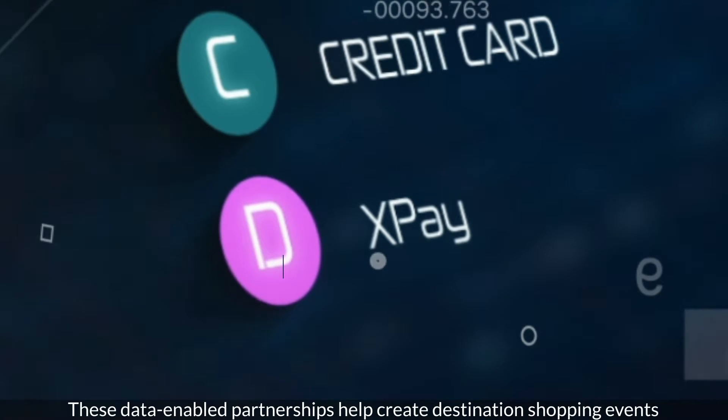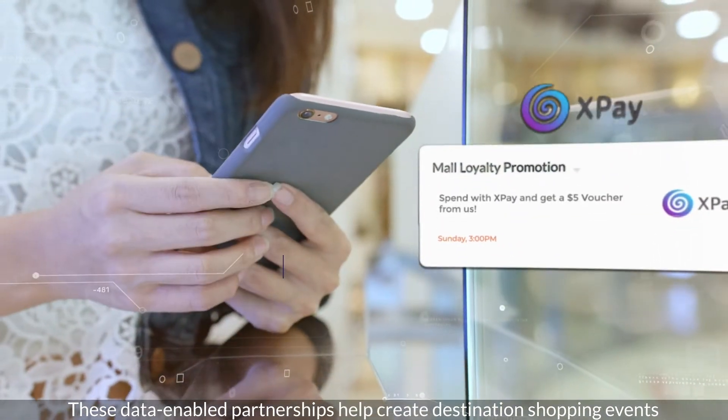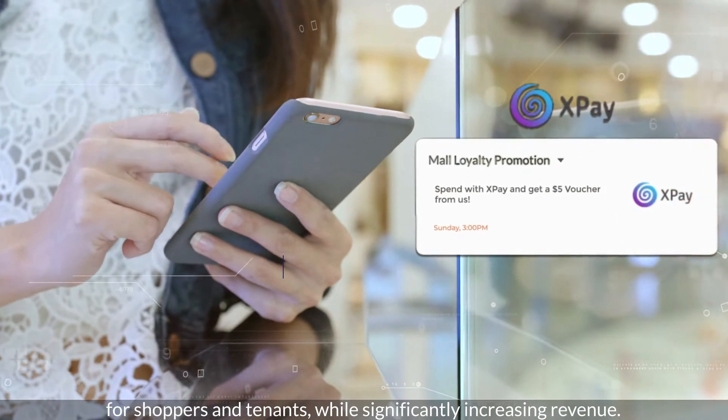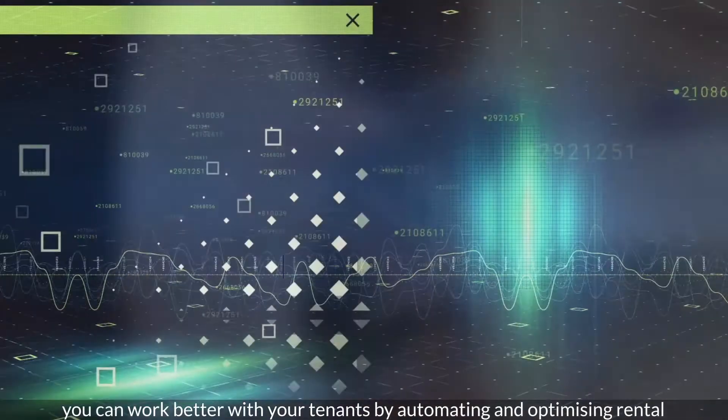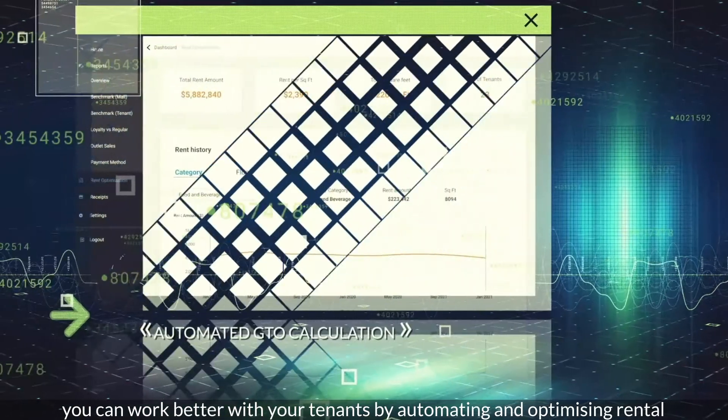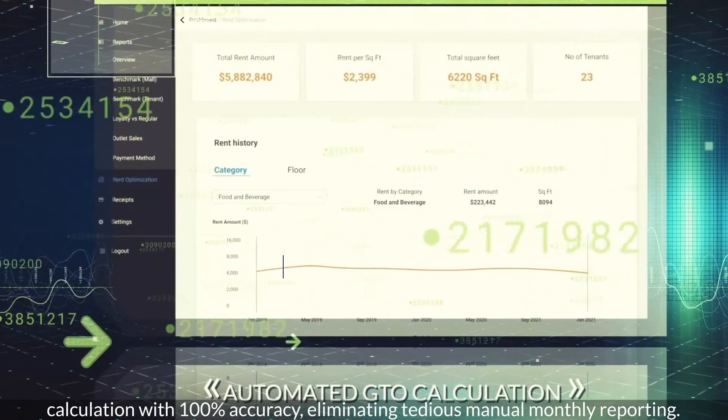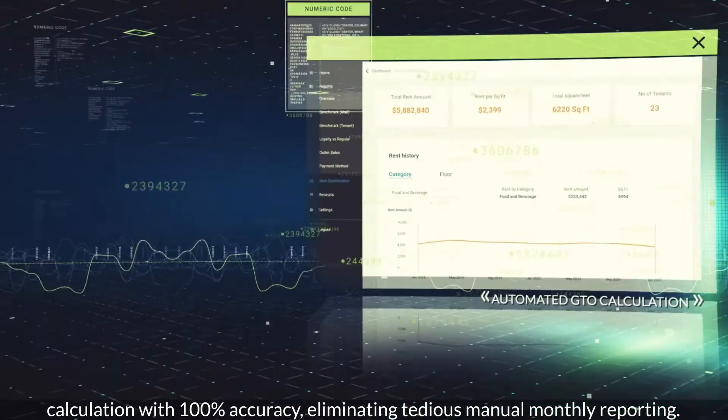These data-enabled partnerships help create destination shopping events for shoppers and tenants while significantly increasing revenue. With AI-MAZING, you can work better with your tenants by automating and optimizing rental calculation with 100% accuracy, eliminating tedious manual monthly reporting.